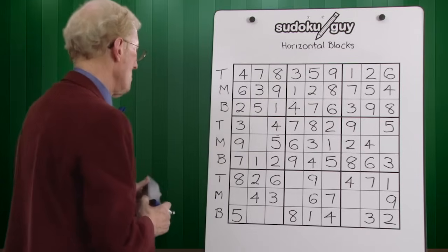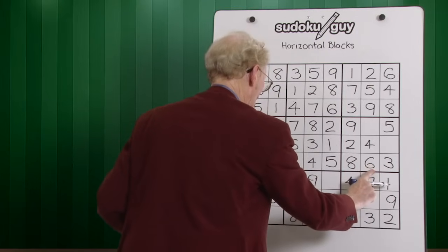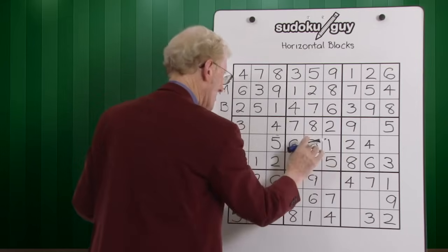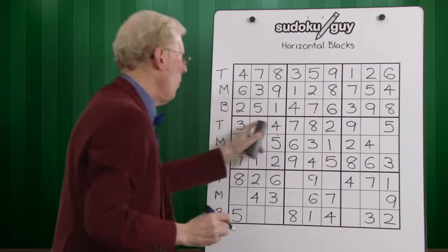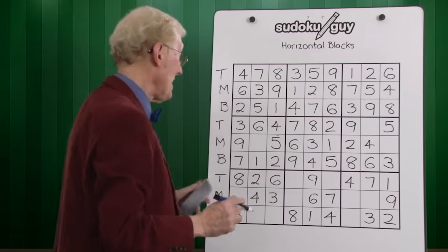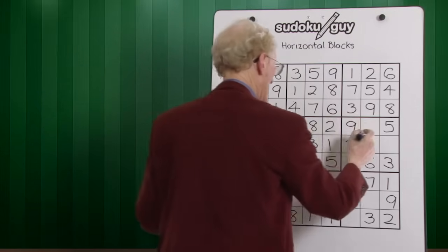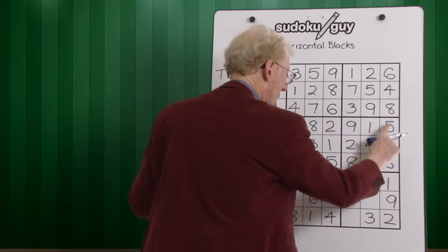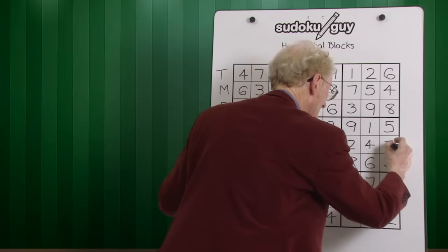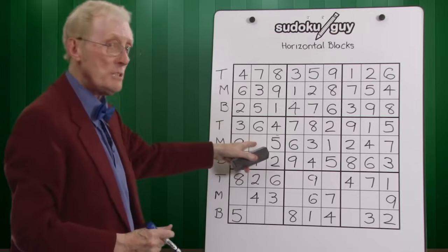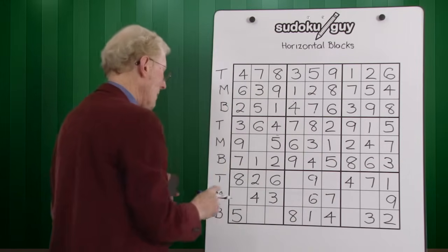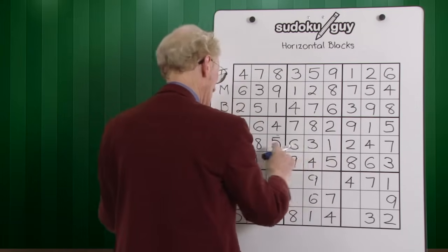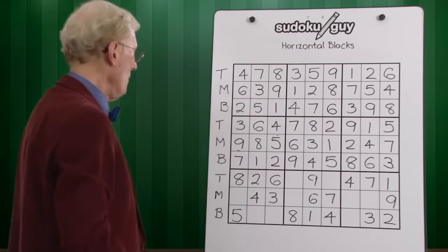Back to sixes: this block has a six at the bottom, this block has a six in the middle row, and this block has no six — so it must be in the top. That becomes a six. Now there's only one cell left in this row — counting through, it turns out to be a one. Then this block has only one left — counting to nine, seven is missing, so we put seven in. Next, there's only one left in this block and this row — counting, eight is missing. We've now solved another set of three horizontal blocks.